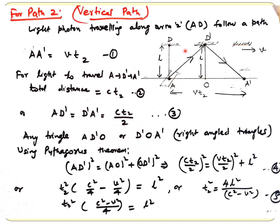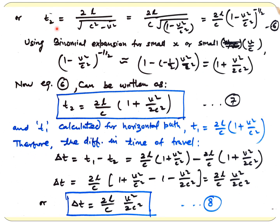Using Pythagoras: (C·T2/2)² = (V·T2/2)² + L². Rearranging, T2 = 2L/C · (1 − V²/C²)^(−1/2). Applying the binomial approximation with n = −1/2, we get T2 ≈ (2L/C)(1 + V²/2C²). This is equation 7. Comparing with T1 = (2L/C)(1 + V²/C²), we see T1 and T2 differ — so T1 − T2 ≠ 0, meaning there is a time difference creating a path difference and hence an interference pattern.